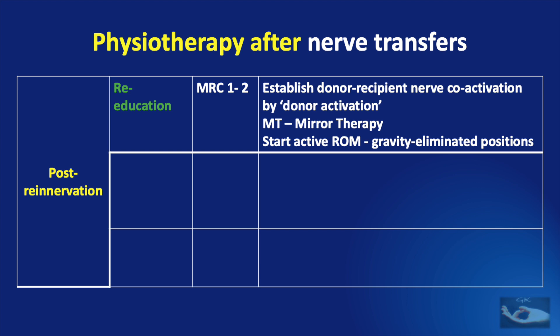Now that innervation of the muscle has occurred, the post re-innervation period begins. The first phase is the re-education phase, carried on from the time the MRC grading is 1 until it reaches MRC grading 2. The main idea is to establish donor-recipient nerve co-activation by donor activation. Mirror therapy can be used and we can start active range of movements and maintenance of gravity eliminated positions. For instance, in the case of flexor digitorum superficialis fascicle of the median nerve used as a donor to re-innervate brachialis, elbow flexion may be initiated by concomitant finger flexion.